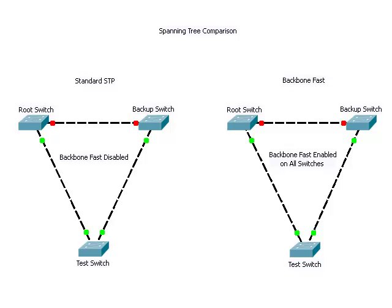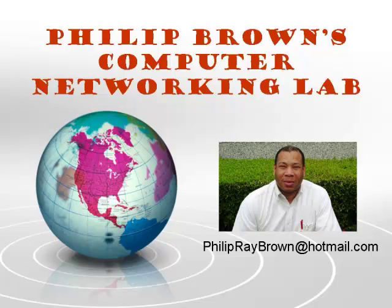After about 50 seconds, spanning tree has rerouted the topology that did not have Backbone Fast enabled on it. We have just viewed how Backbone Fast can be used to converge a network more quickly after an indirect link failure occurs. I hope this video was informative and I thank you for viewing. I'll see you in the next one.